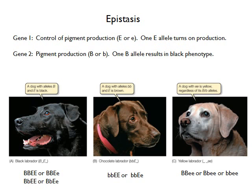For a black lab, you need just one copy of the big B allele, but there also has to be one copy of the big E allele so pigment production occurs. For a chocolate lab, the genotype is little b, little b, but that big E allele must still be present for any pigment to be produced. For a yellow lab, the genotype is little e, little e — pigment production is not occurring, so the dog is yellow regardless of whether the B gene is big B big B, big B little b, or little b little b, because gene 1 is not even being turned on. Gene 1 is controlling the expression of gene 2 — this is an excellent example of epistasis.